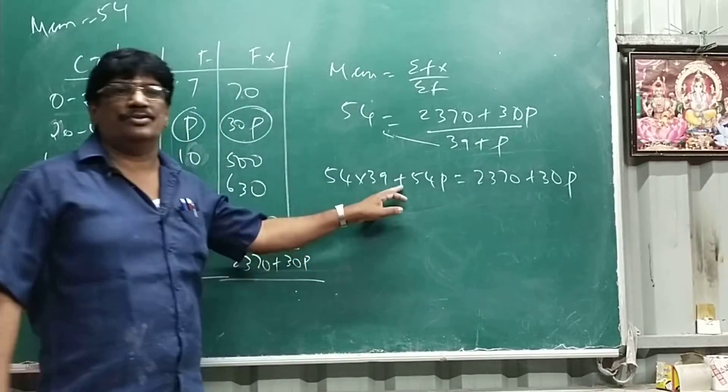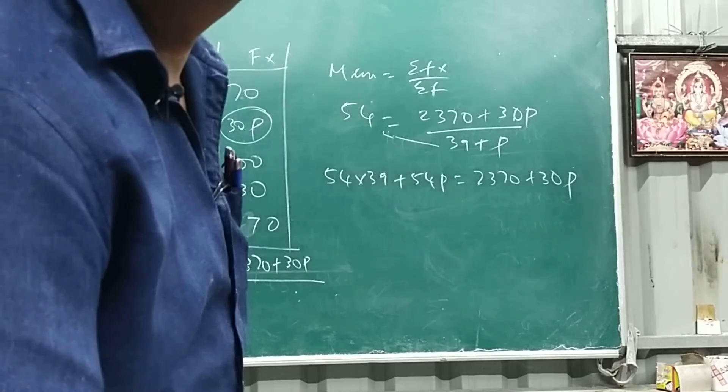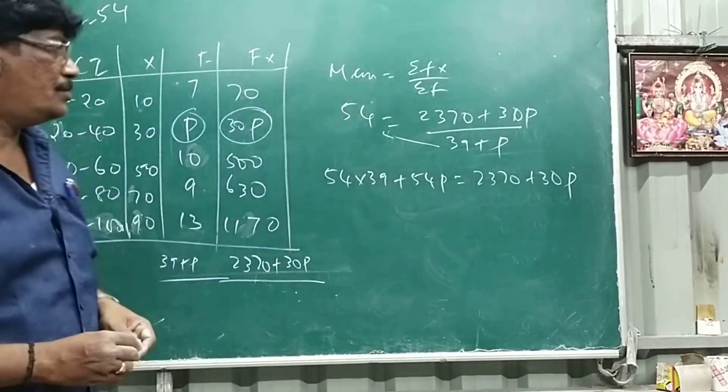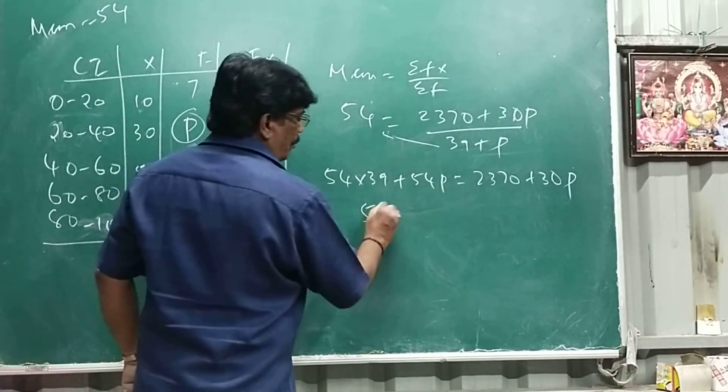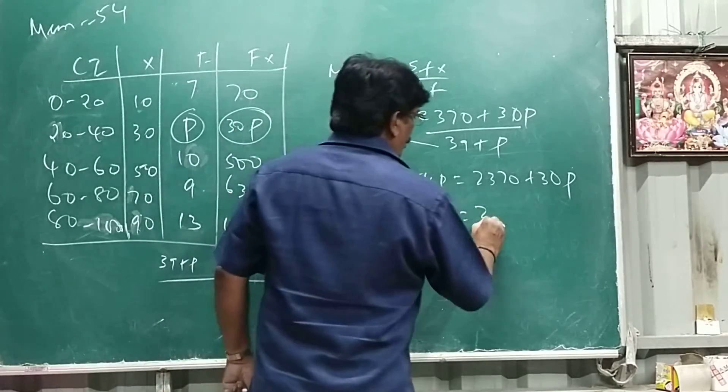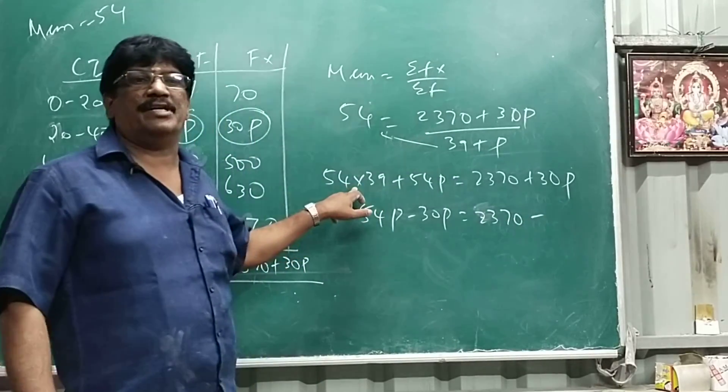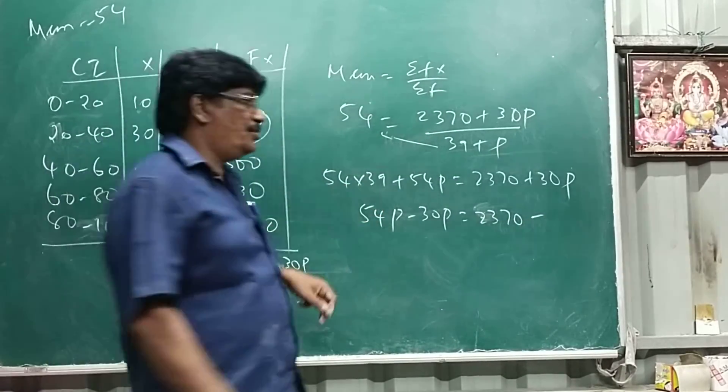So now this number equal to this side, so this become 54 minus 30p equals 2370 minus, these two multiply, this become 2106.